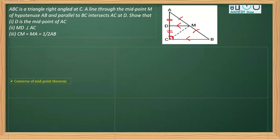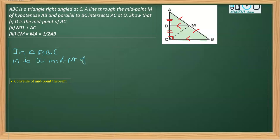We need to prove AD is equal to DC. For proving this, we are going to apply the converse of the midpoint theorem. So we'll consider triangle ABC. In triangle ABC, we know that M is the midpoint of side AB.